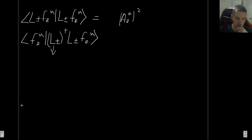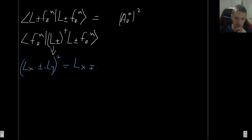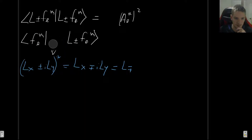What is the Hermitian adjoint of L±? Remember, L± = Lx ± iLy. Since this is not a vector, we just take the normal conjugate. So we get Lx ∓ iLy, which is simply L∓. So instead of having L±, we get L∓ acting from the left. Let's write that in here - so here we get L∓.